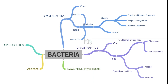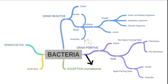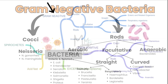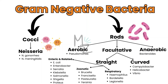Bacteria are classified into spirochetes, and also classified based on acid-fast staining into acid-fast bacteria — with an exception being mycoplasma. They are also classified based on gram staining into gram-positive and gram-negative. Gram-negative bacteria are further subdivided into cocci such as Neisseria.